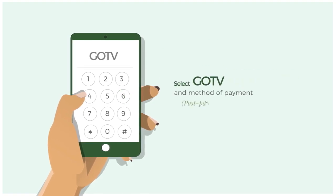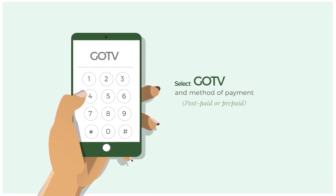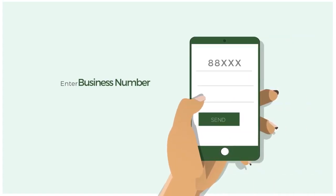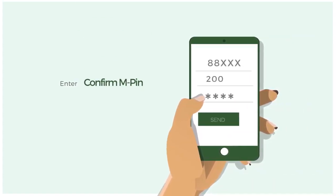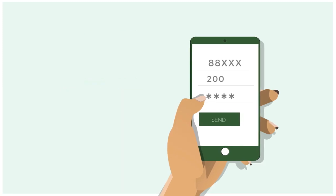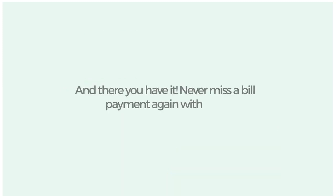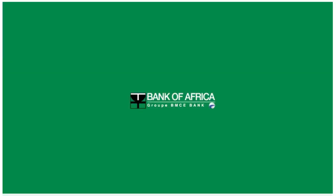Pick GoTV and select your method of payment. Enter your business number, the amount you wish to pay, and confirm your MPIN number. And there you have it — never miss a bill payment again with Bank of Africa.